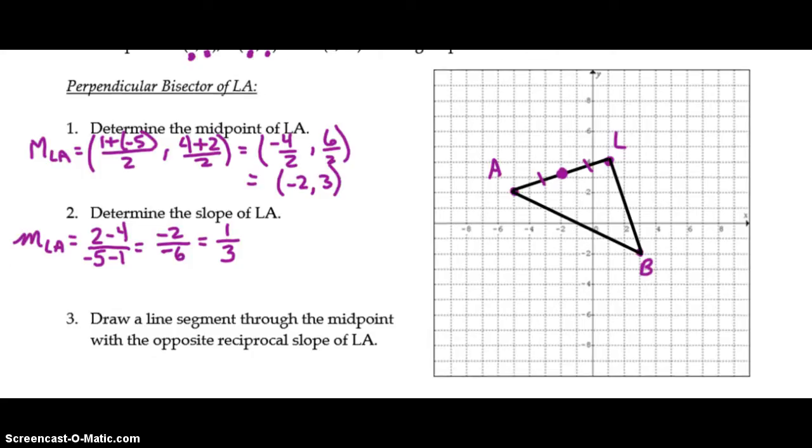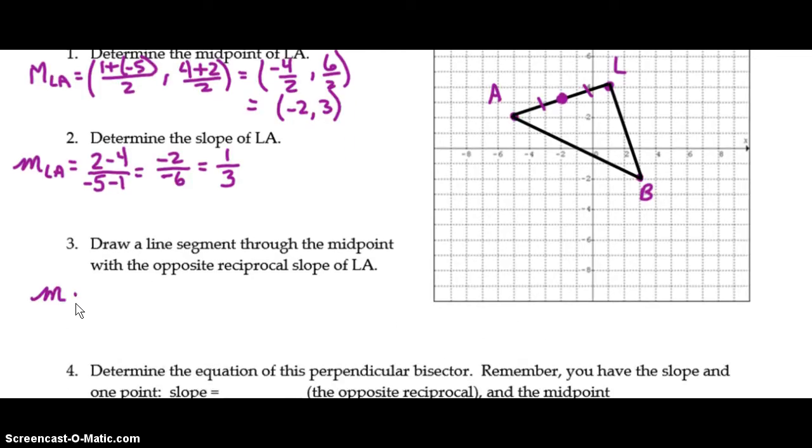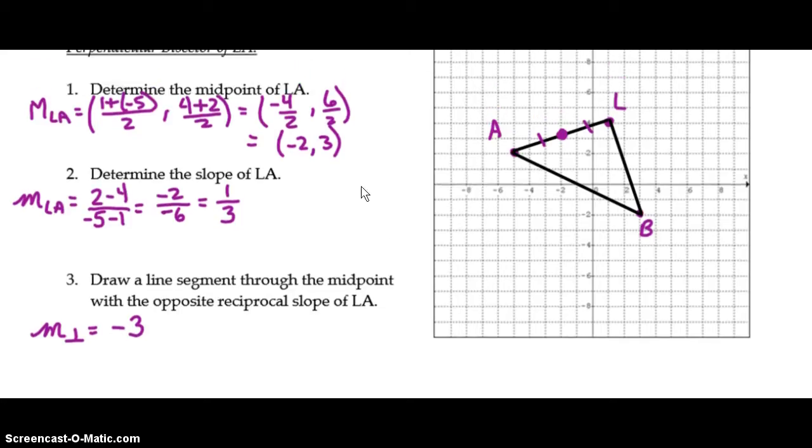But that's the slope of AL. We need it to be perpendicular to AL. So the slope of the perpendicular line would be the opposite reciprocal. So flip 1 third upside down to become 3 over 1, or just 3. And the sign changes from positive to negative. So you're going to draw a line segment through that midpoint with this slope. So from this midpoint here, your slope is negative 3 with a rise of negative 3 and a run of 1. So your perpendicular bisector will pass through those two points. Right there. Perpendicular bisectors can pass straight through the triangle. They do not have to remain within the confines of the triangle at all. To indicate that it is perpendicular, you'll need that right angle symbol.